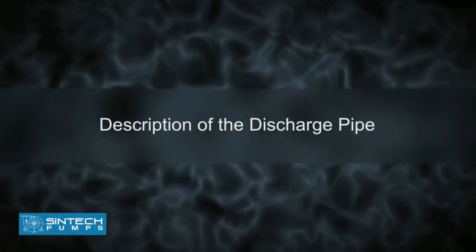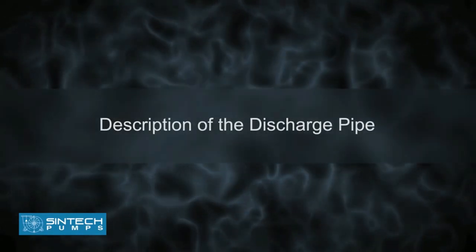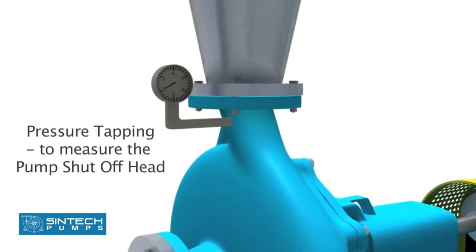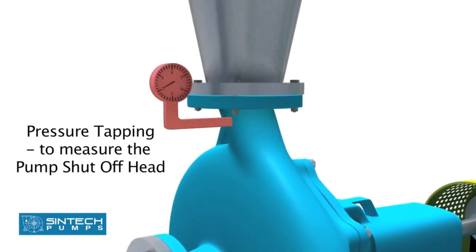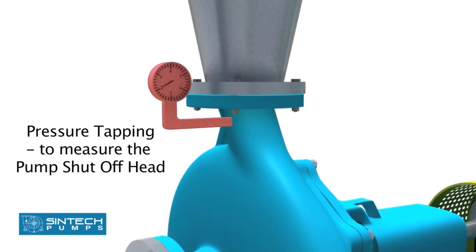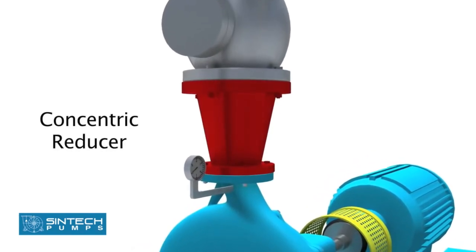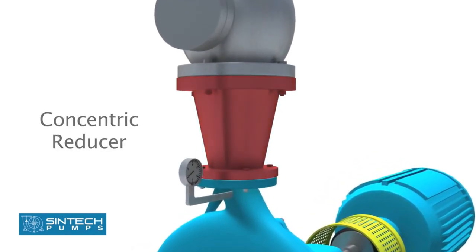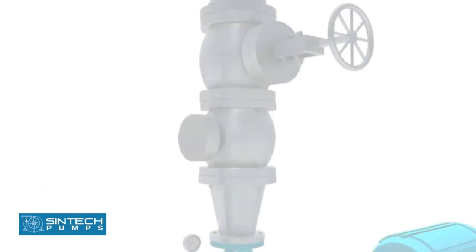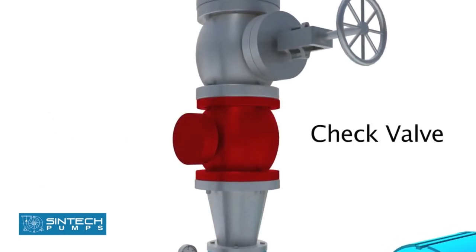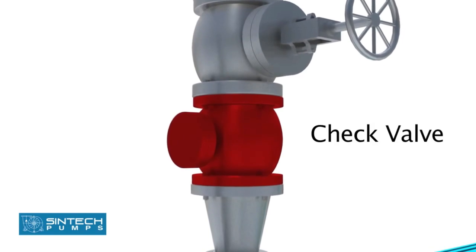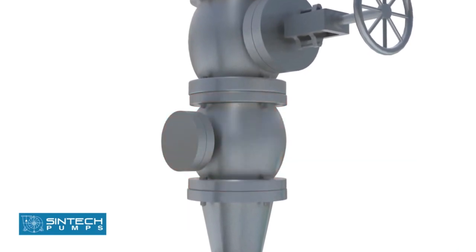Description of the discharge pipe: There should be a pressure tapping as close to the pump outlet and before the isolation valve as possible to measure the pump shutoff head. Concentric reducers are installed in the discharge pipe to minimize friction losses. The check valve used in the discharge should be of non-slam type to prevent hydraulic shocks.